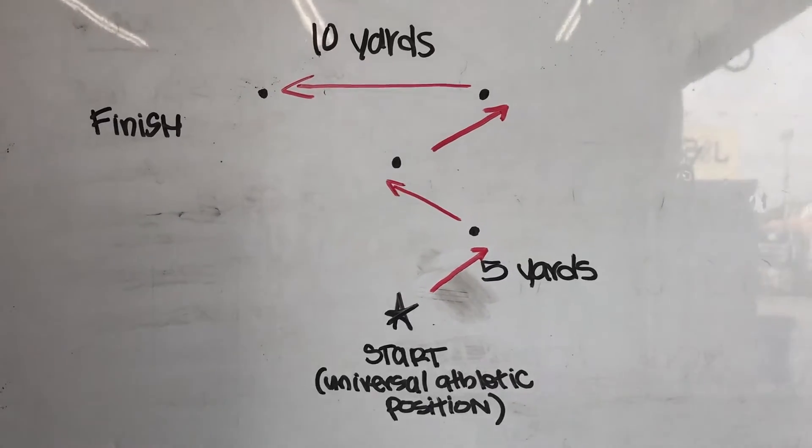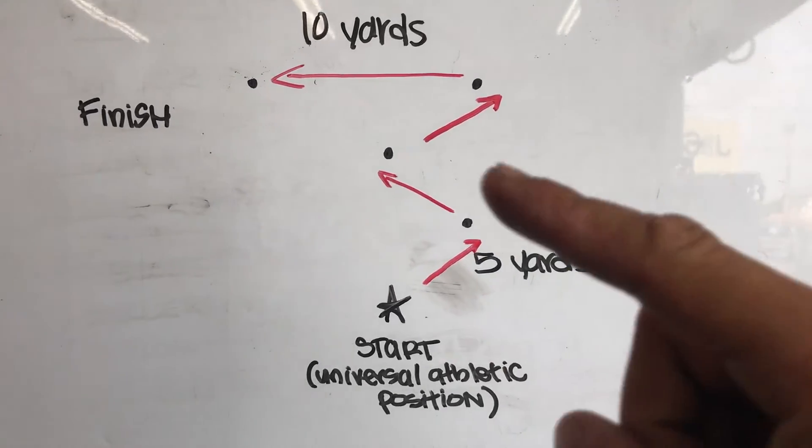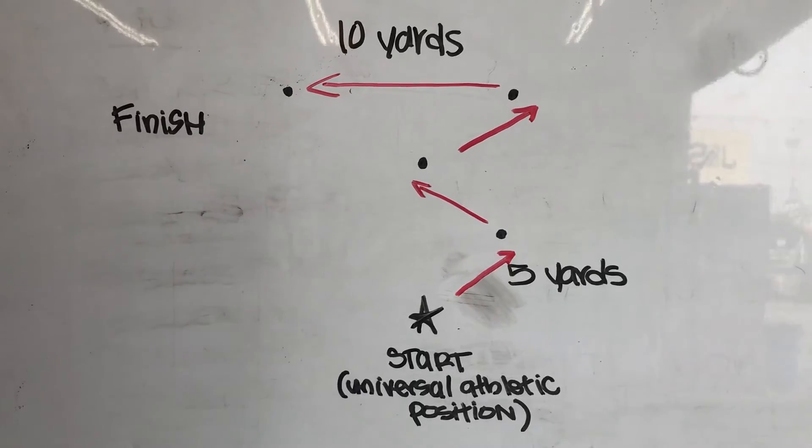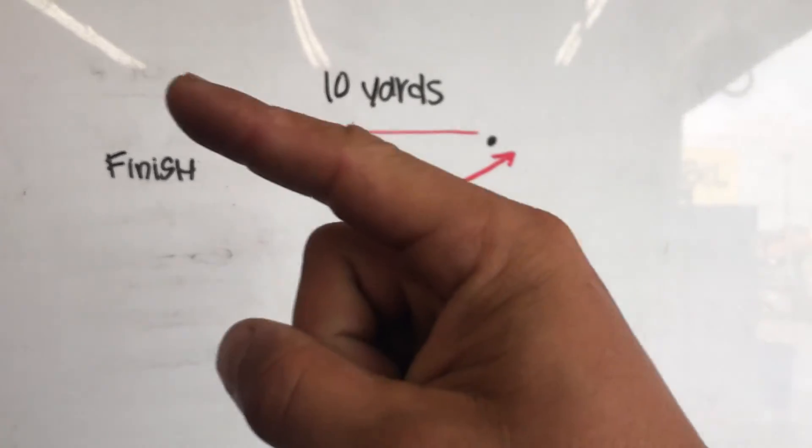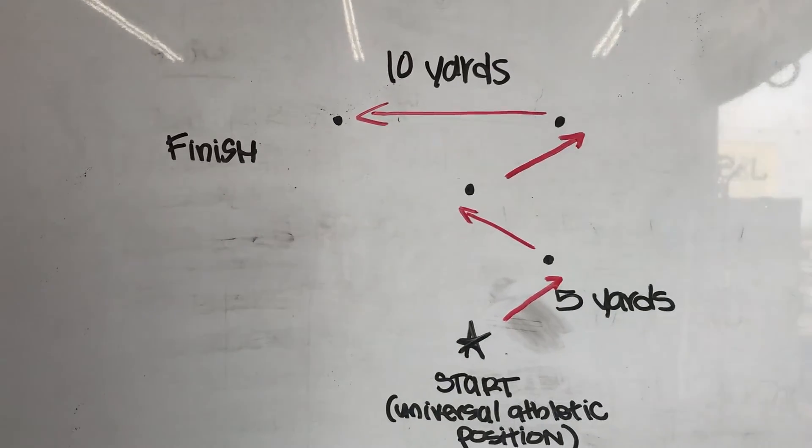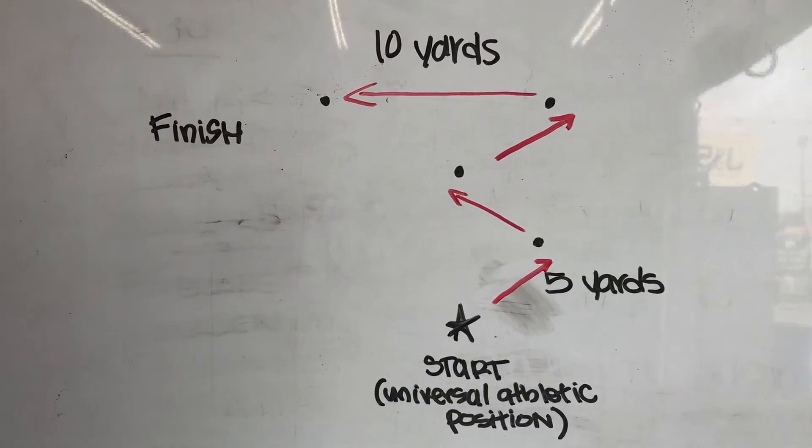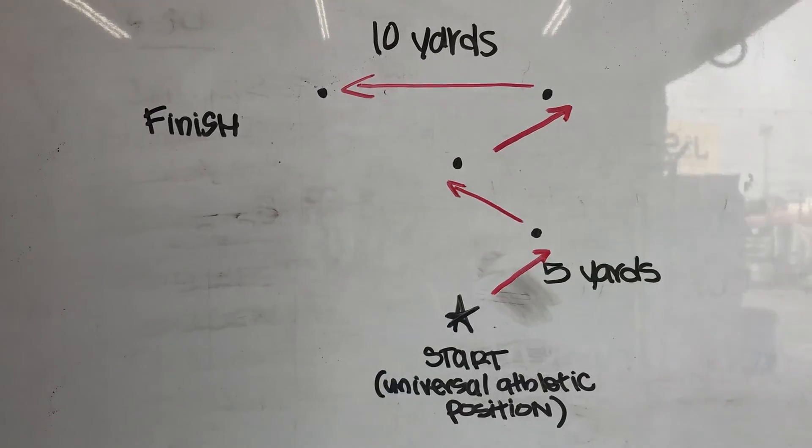The zigzag cones are five yards apart—short distances. Then you're gonna change the pace as you finish all the way through. Make sure to go past the cone; don't just decelerate before the cone.